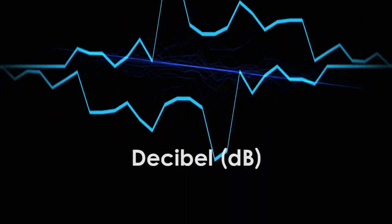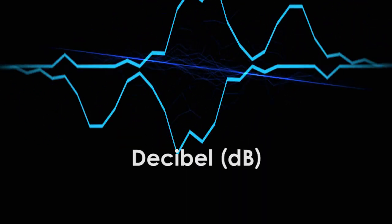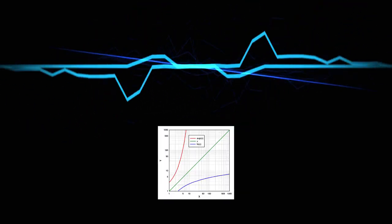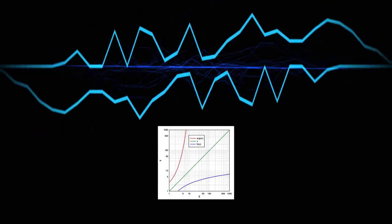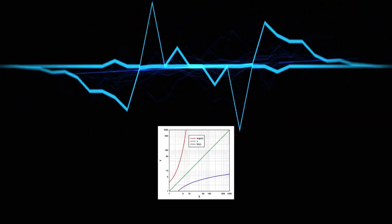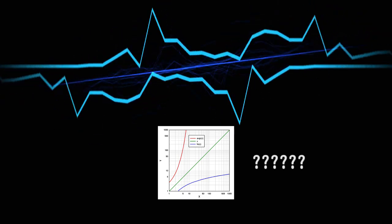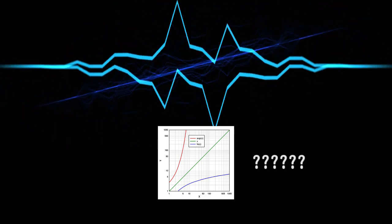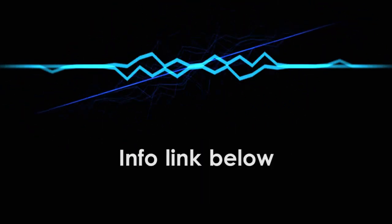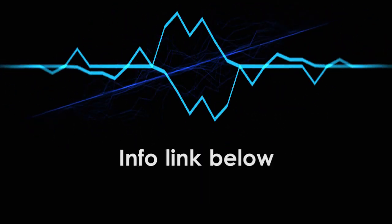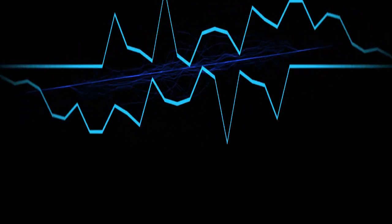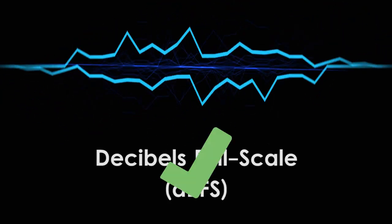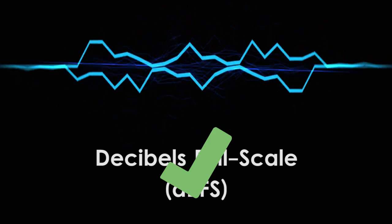Decibels are logarithmic units. This basically means that they don't add together in the same way that inches or liters do, which can make them somewhat confusing to work with. I've put a link in the description to the Wikipedia article on decibels if you'd like to know more. For everyone else, just know that in home recording, decibels are a useful measurement of relative loudness.